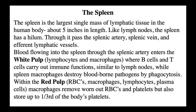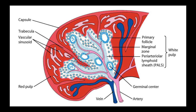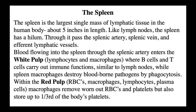The spleen, like the lymph node, is a secondary lymphatic organ. But the lymph node has lymph flowing through it, while the spleen has blood flowing through it — that's how it receives its lymphocytes and macrophages. B cells and T cells carry out their immune functions in the spleen just like in lymph nodes. Macrophages there can destroy blood-borne pathogens by phagocytosis in the white pulp. In the red pulp — where you have red blood cells, macrophages, lymphocytes, and plasma cells — macrophages also remove worn-out red blood cells and platelets, and store up to a third of the body's platelets.